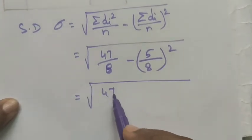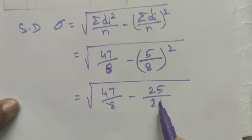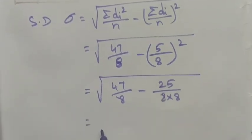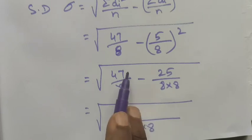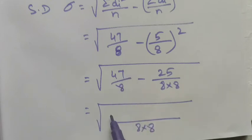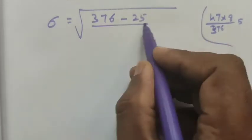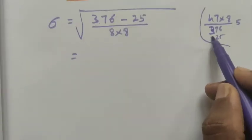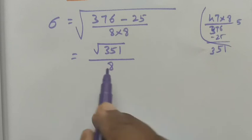Substituting: sigma = square root of (47/8) minus (25/64). Taking LCM as 8 × 8 = 64: this becomes square root of (47 × 8 minus 25) divided by 64. Now 47 × 8 = 376, so we get square root of (376 minus 25) divided by 64 = square root of 351 divided by 64.